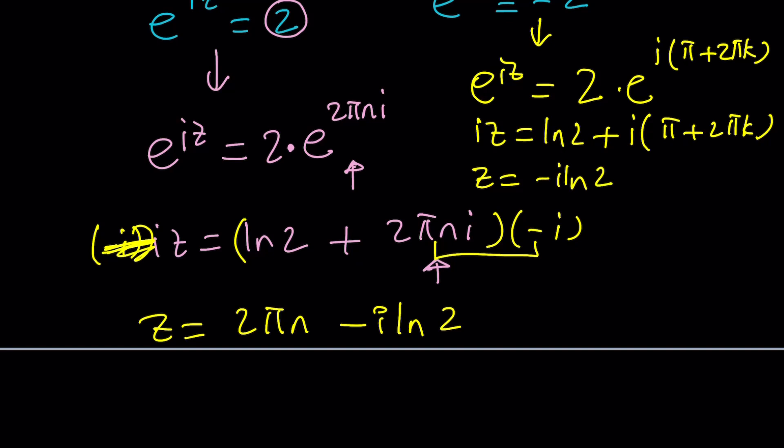And then, that's going to give us 1 plus pi plus 2 pi k. Of course, you can write this as 2k plus 1 multiplied by pi, which is an odd multiple of pi.